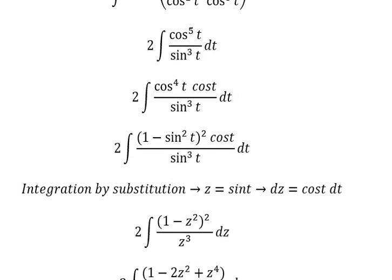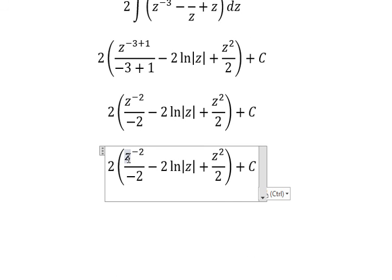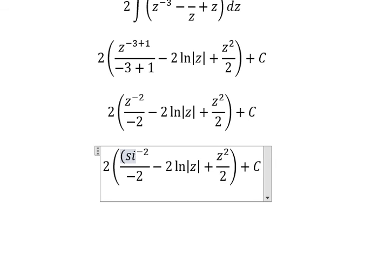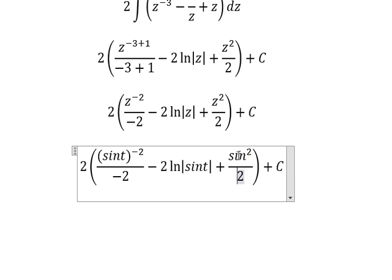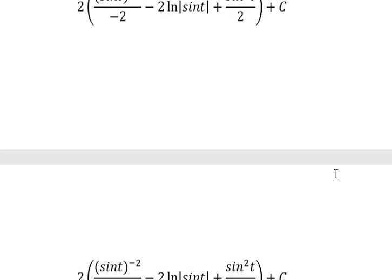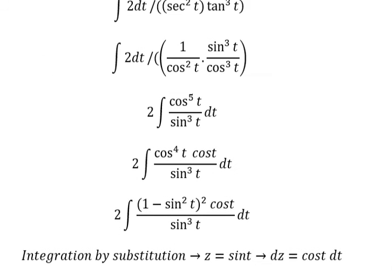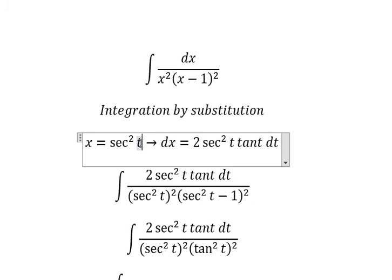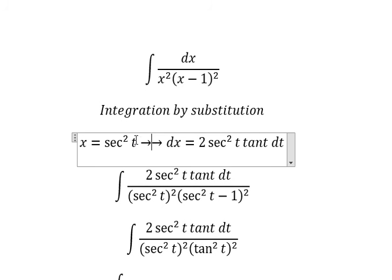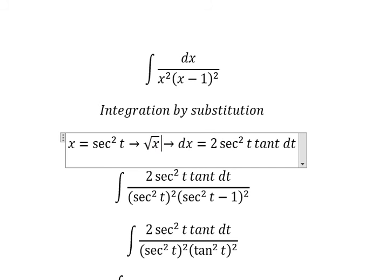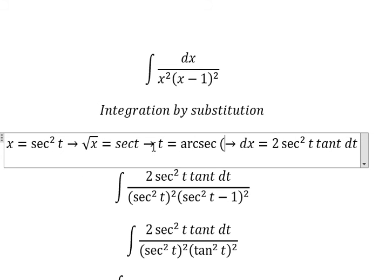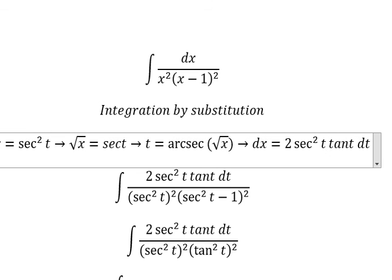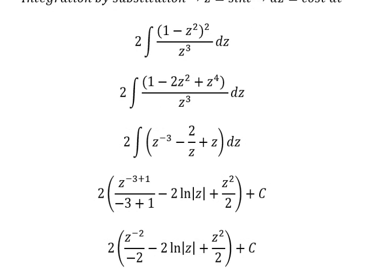Now we back-substitute. Z is equal to sine t. For t, we take the square root of both sides, so the square root of s equals secant of t, giving t equal to arcsecant of the square root of s. We substitute this expression back in to replace t and get the final answer in terms of s.